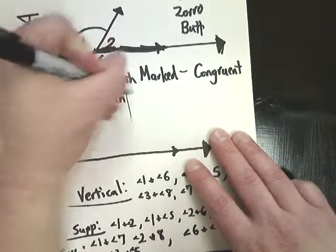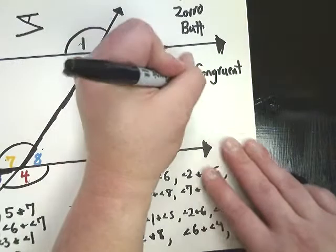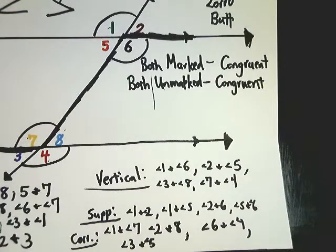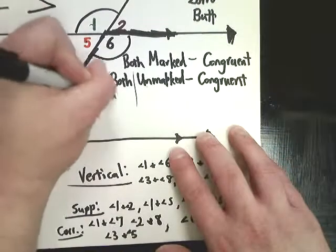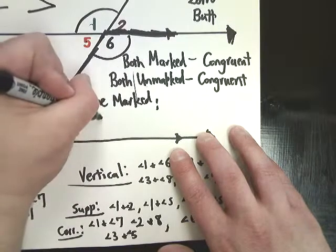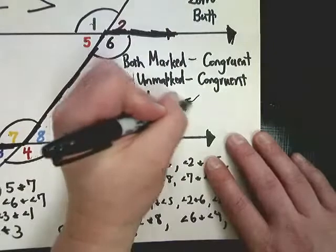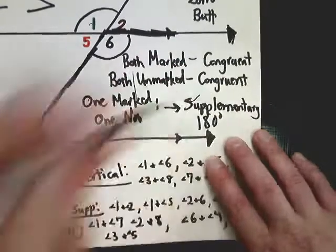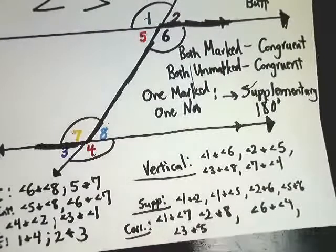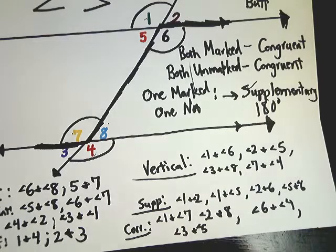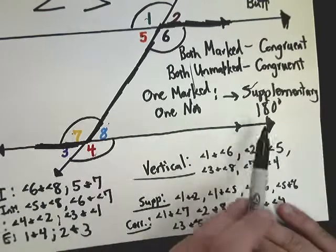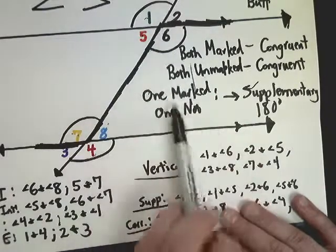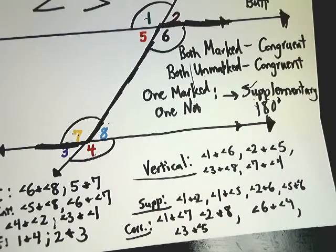If both angles you're comparing are unmarked, they are also congruent to each other — angles 2, 5, 8, and 3 are all congruent to each other. If one angle is marked and the other is not, those two angles are supplementary — so you set them equal to 180 degrees. For example, angle 2 is marked and angle 7 is not, so 2 + 7 = 180. In the next video we'll do practice problems using both the same-crossing rules and Butt-Zorro-Butt.